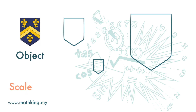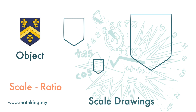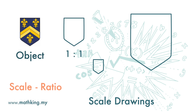For example, this one has a scale of 1 to 1 — the drawing is the same size as the object. This one has a scale of 1 to 1/2 — the drawing is larger than the object. This one has a scale of 1 to 2 — the drawing is smaller than the object.